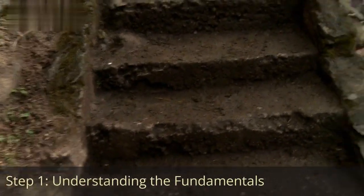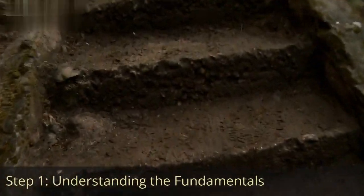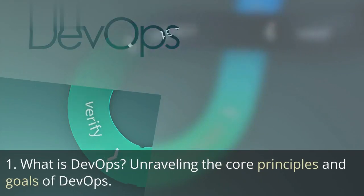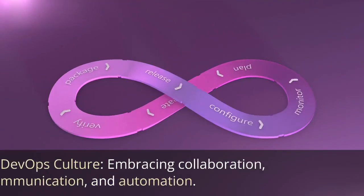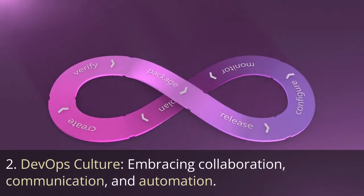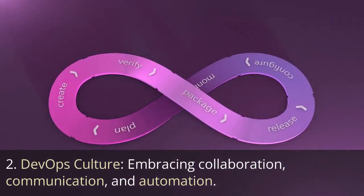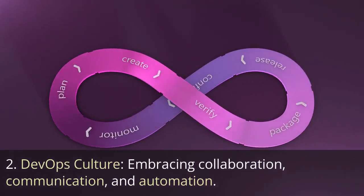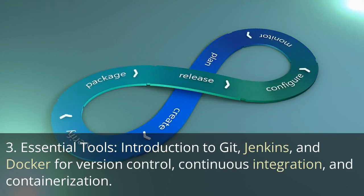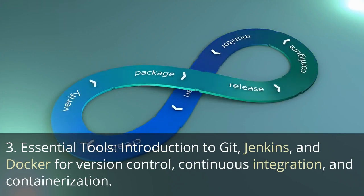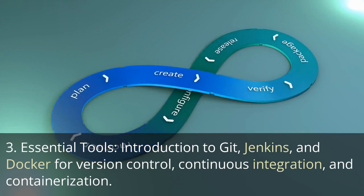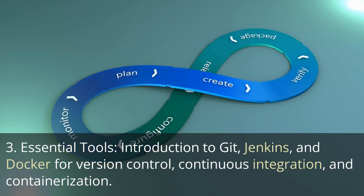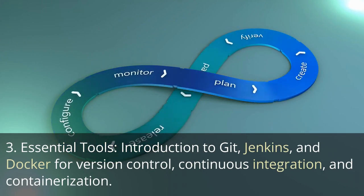Step 1: Understanding the Fundamentals. First, what is DevOps? — unraveling the core principles and goals of DevOps. Second, DevOps Culture — embracing collaboration, communication, and automation. Third, Essential Tools — an introduction to Git, Jenkins, and Docker for version control, continuous integration, and containerization.